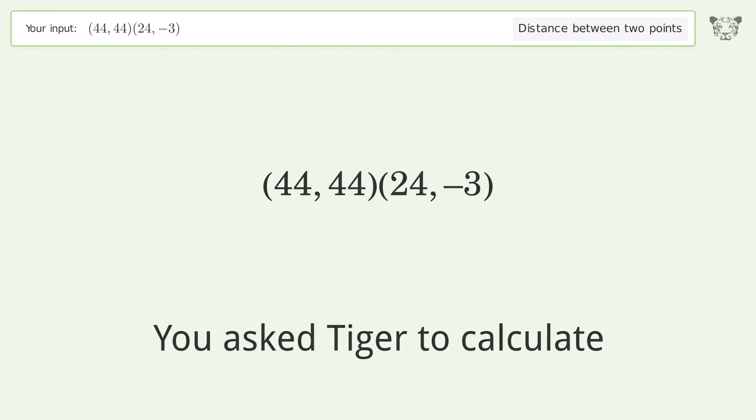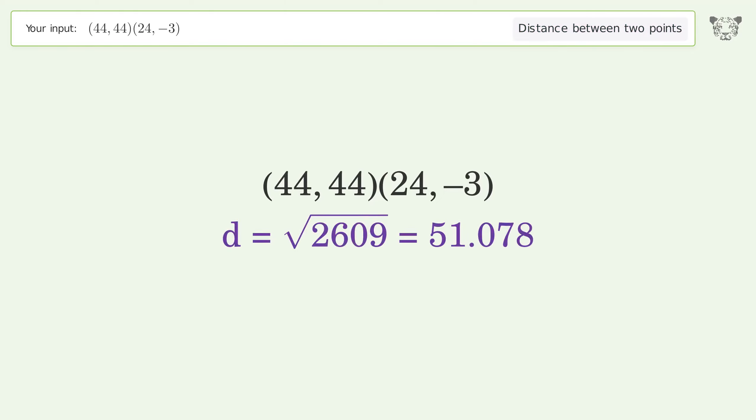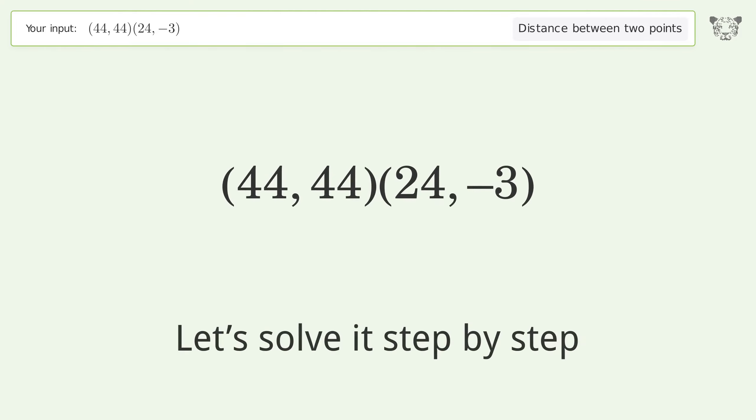You asked Tiger to calculate this. This deals with the distance between two points. The distance between the two points is the square root of 2609 or 51.078. Let's solve it step by step. Plot the two points and calculate the distance using the formula.